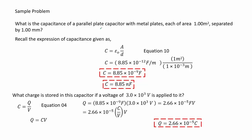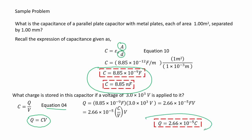Sample problem: What is the capacitance of a parallel plate capacitor with metal plates, each of area 1 meter squared, separated by 1 millimeter? Recalling the equation for capacitance shown in equation 10, we get approximately 8.85 nanofarad. To determine the charge stored if 3 kilovolts is applied, we use equation 4 and solve for charge Q, obtaining a stored charge of 2.66 times 10 to the negative 5 coulombs.